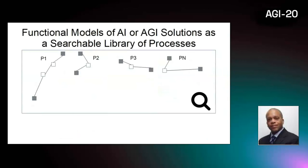By defining everything cognition can do using a simple functional model that can be confirmed to be complete, then all models of AI or AGI containing valid functions of cognition can potentially be represented in terms of these functional components — whether those functional components are models of reasoning processes and the impact of their outcomes on cognitive well-being in different contexts, whether they are AI solutions that implement a narrow set of those reasoning processes, or whether an AGI that attempts to implement a broader set. Any functionality implemented by any researcher then becomes part of a single larger implementation of AGI.